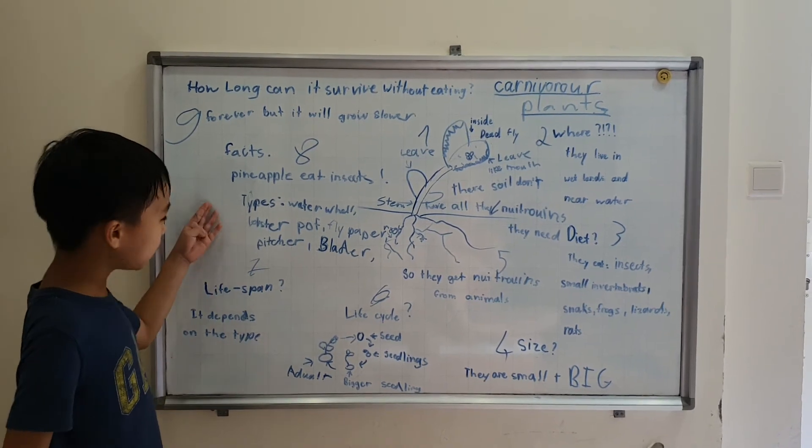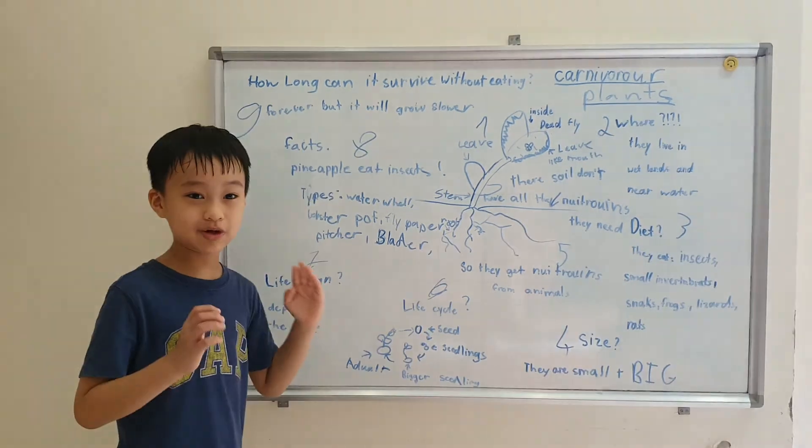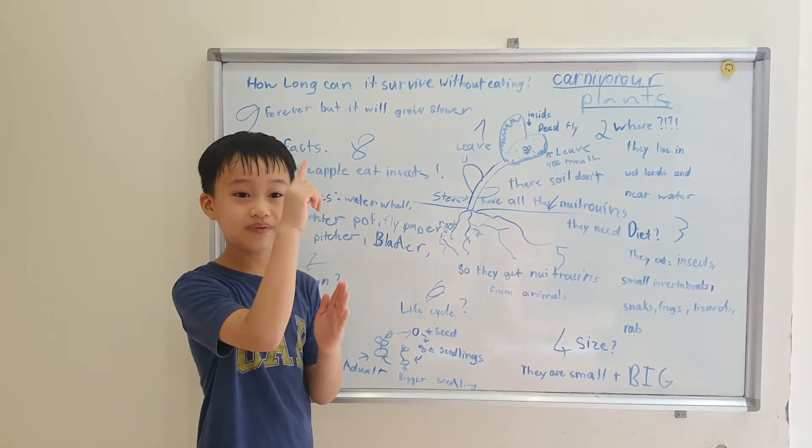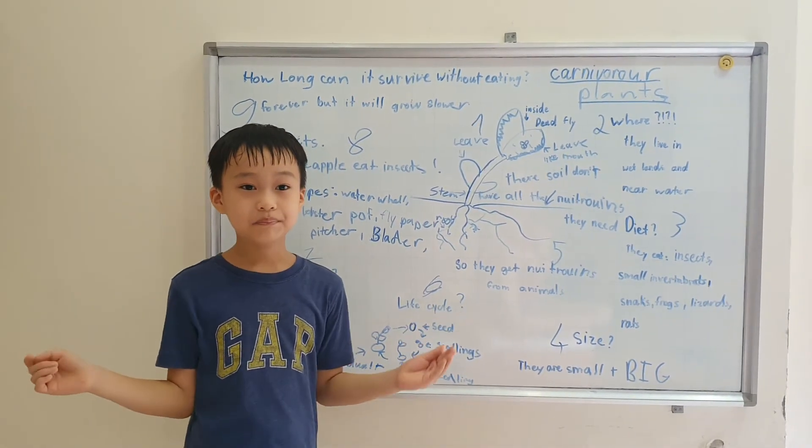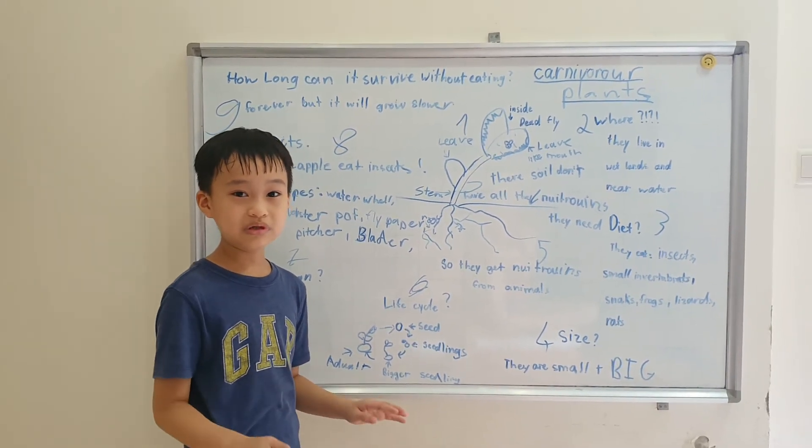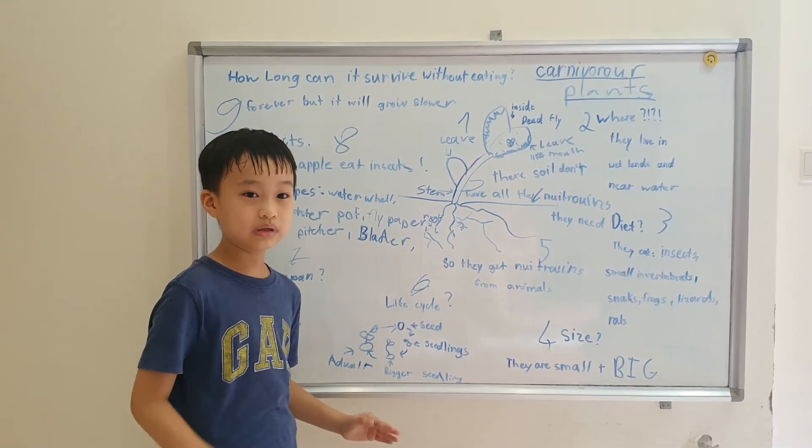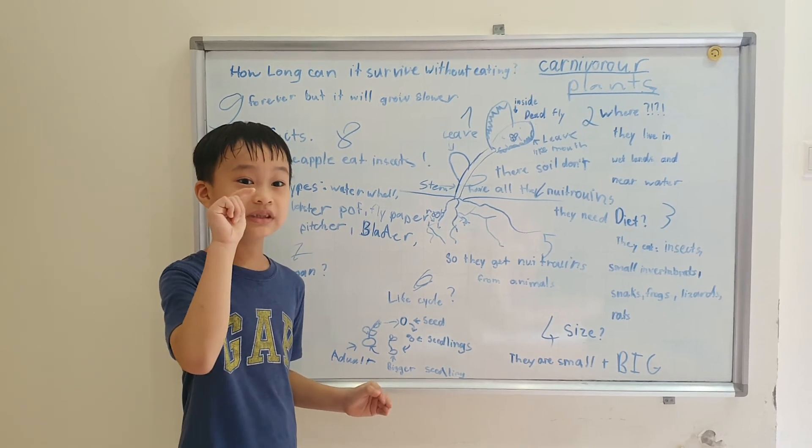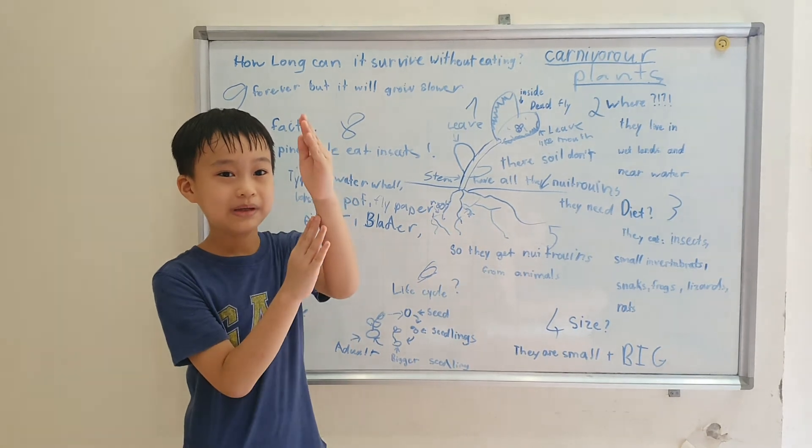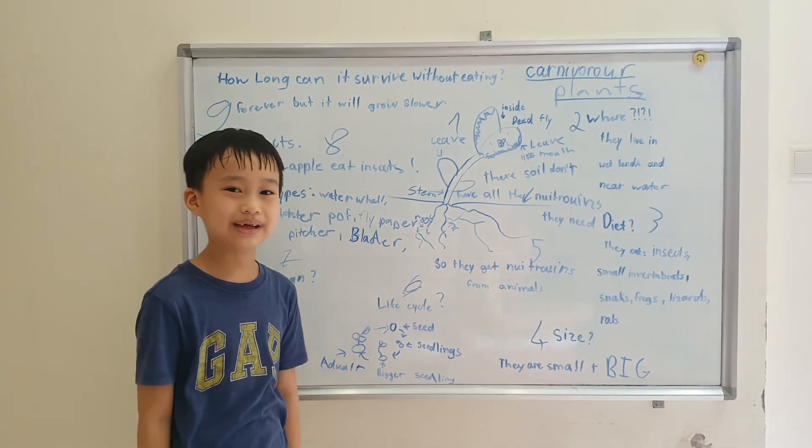There are also some types like lobster pot. Lobster pot works like this: at the top there's a flower that keeps the pollinators from getting eaten, but underground there are roots which eat worms, insects and microbes. There are tiny hairs pointing up to the digestive stomach, and that directs the insect to go all the way up to the digestive stomach where it cannot go out and gets digested.